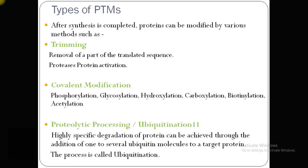Types of PTMs: after protein synthesis is complete, proteins can be modified by various methods such as trimming, covalent modification, and proteolytic processing. During trimming, part of the translated sequence is removed with the help of a protease for protein activation. During covalent modification, chemical modifications like glycosylation, hydroxylation, and carboxylation occur. During proteolytic processing or ubiquitination, highly specific degradation of protein can be achieved through addition of one or several ubiquitin molecules to the target protein. This ubiquitination process tags newly synthesized protein for degradation, occurring in misfolded, dead, or toxin proteins, and it can switch off or on several signaling pathways.